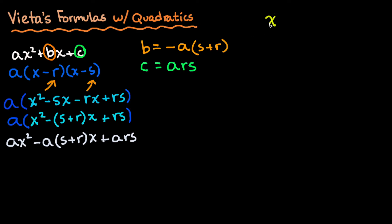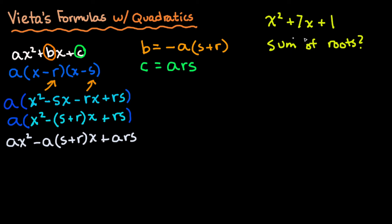Let's say we have x squared plus 7x plus 1, and we want to find the sum of the roots. You might be tempted to use the quadratic formula or try factoring. But since r and s are the roots, we want r plus s. From our formula, b = −a(r + s), so we just solve for r plus s in terms of b and a.